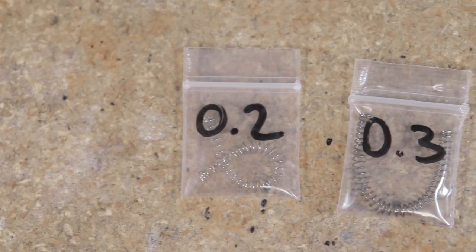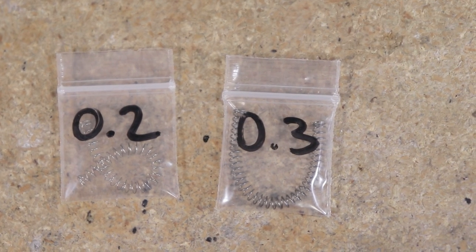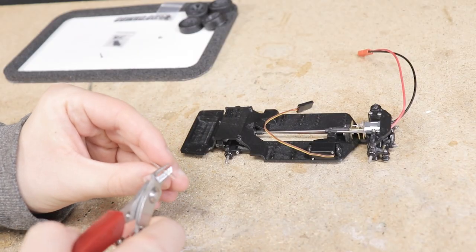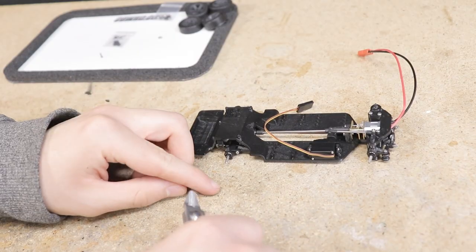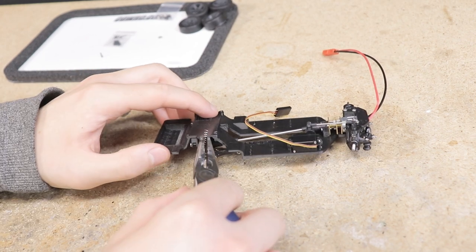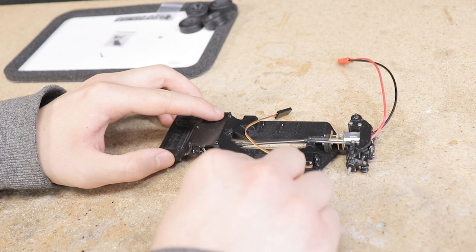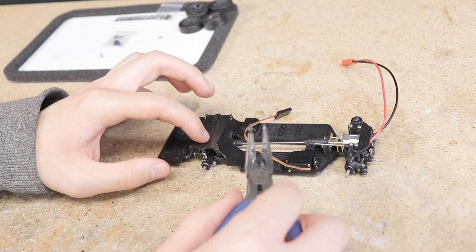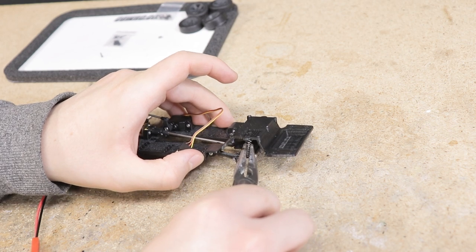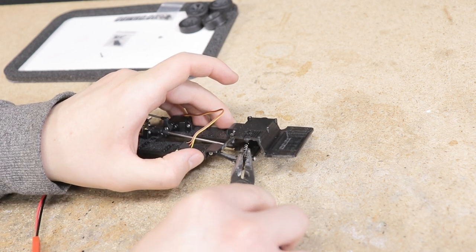At this point, since the chassis is nearly complete, I went ahead and installed the rear springs. Just like with the front springs, which thickness you choose and how long you make your springs will come down to personal preference and how heavy your car is. You may find yourself modifying the rear springs as you progress with your build and get the weight of the body and electronics added. The springs will hold themselves in place, though a small amount of glue once you know what size springs you want to use is a good idea to help keep them in place.